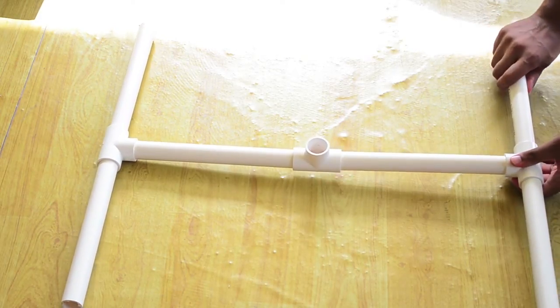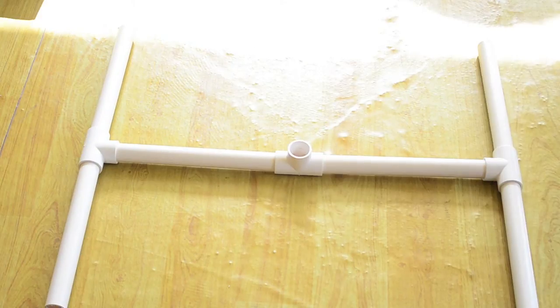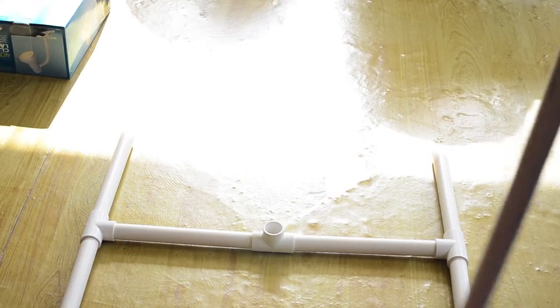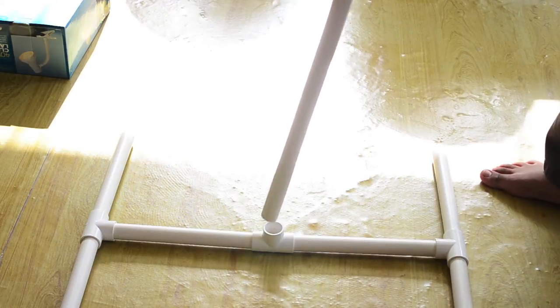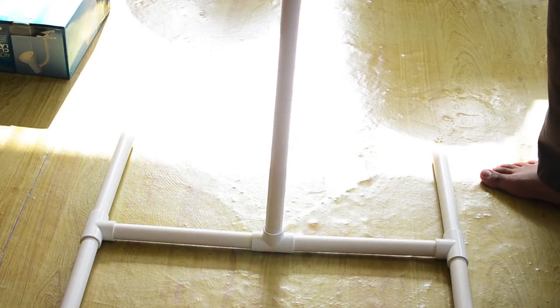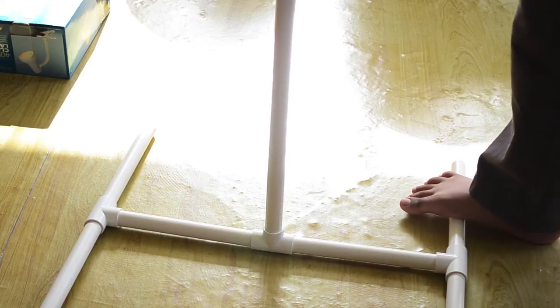After you put in all your 25cm pieces, you should get this, and that's the base of your stand. The next step is to grab your 1m piece and put it in the middle, and this will be the stand for your light stand.